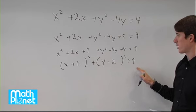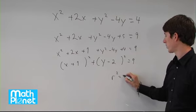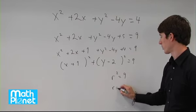So this is our r squared. This is the center of the circle but this is our r squared. So r squared equals 9 or r equals 3.